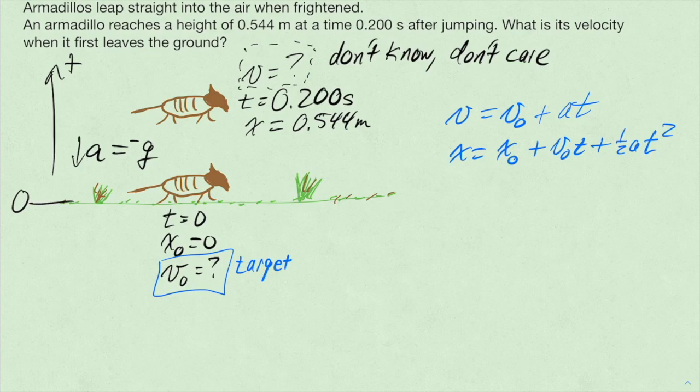So I'll look, okay, do I know v_0? Well, no, that's what I'm looking for, but I also don't know v, right? That's my don't know, don't care variable. That means I can't use that equation right away. If there's two unknowns in it that I don't know, I can't solve that algebraic equation. So that means I have to use the kinematic equation for displacement, or at least start there.